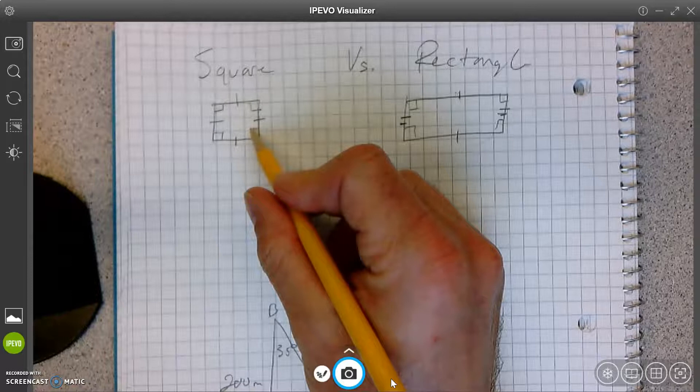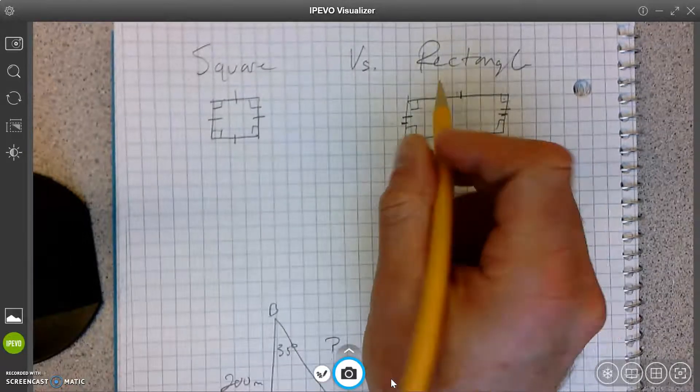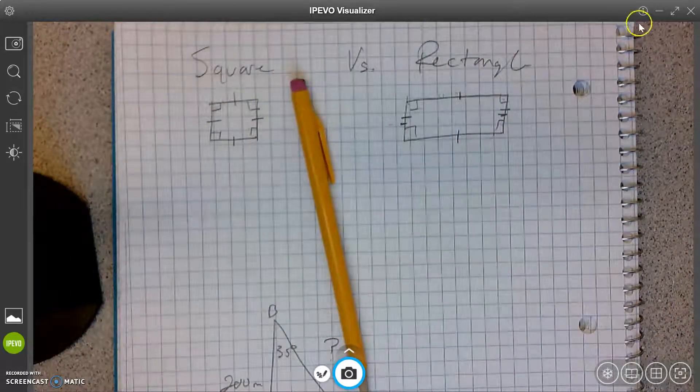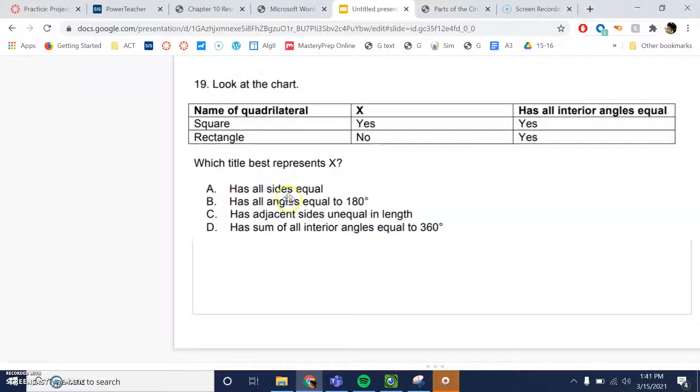In a square, all the sides are the same. All the sides are congruent. But in a rectangle, only the opposite sides are congruent. So that would be A. A has all sides equal. Yes for a square, no for a rectangle. Nice job.